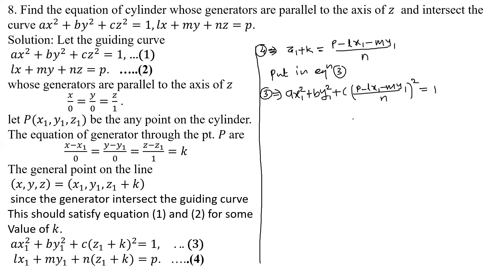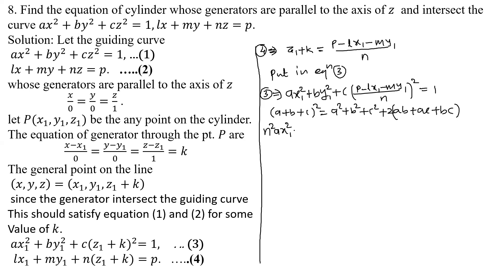We simplify this equation. The LCM of the three terms is n². We multiply throughout by n² and simplify. Expanding the bracket (a + b + c)² gives a² + b² + c² + 2ab. Taking 2 as common throughout: 2ab, 2ac, and 2bc. Multiplying throughout by n², the terms become n²Ax₁² and n²By₁², with n² canceling in the third term leaving C.